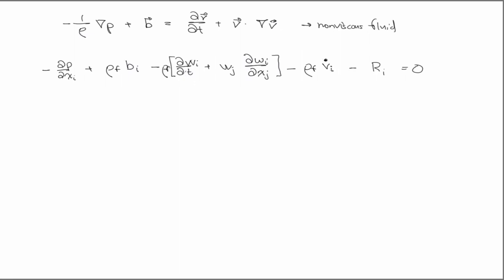And if we use a Darcy type law, we're going to say that K_ij R_j is equal to W_i. Right? So where K is a permeability tensor.